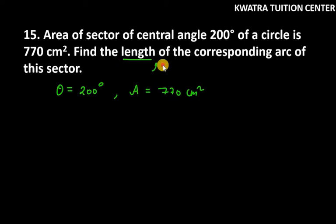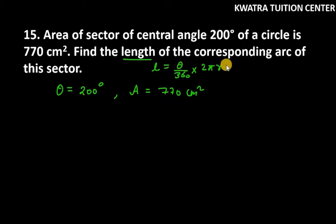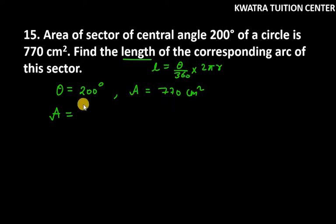We need to find the arc length, and we know the arc length formula is (theta/360) × 2πr. Here theta is given as 200 degrees but r is not given, so first of all we have to find the radius. Since we are given the area, we can easily find the radius using A = (theta/360) × πr².